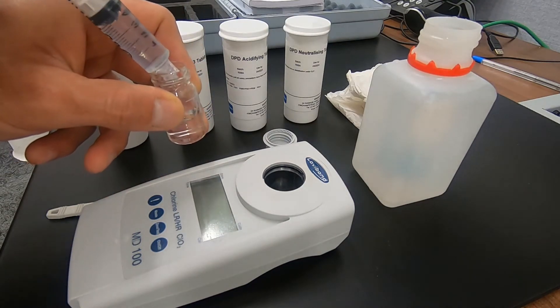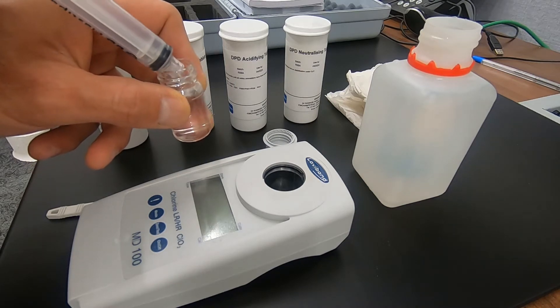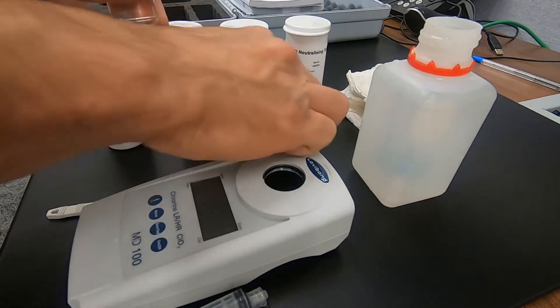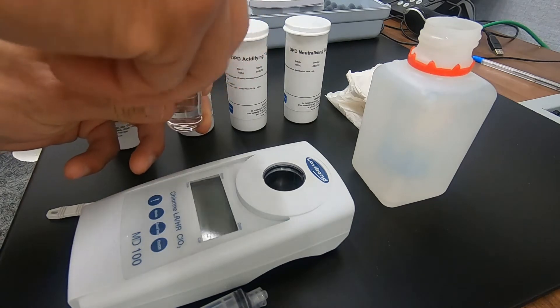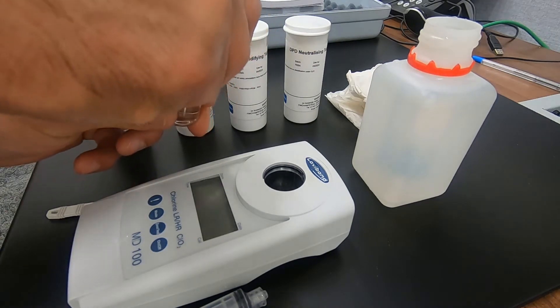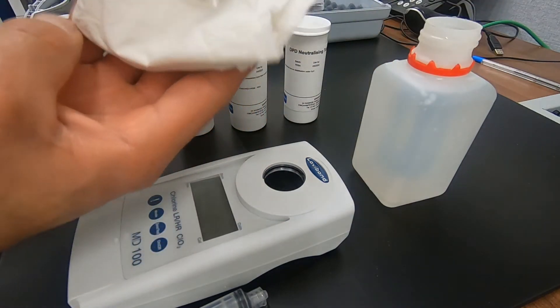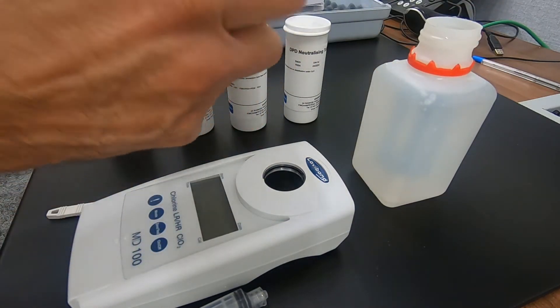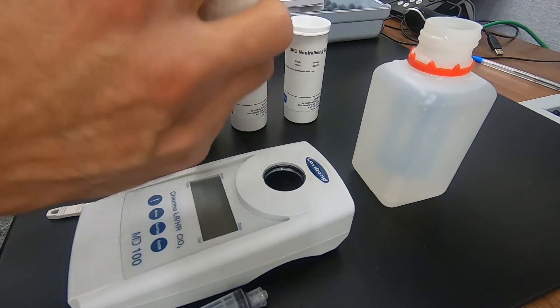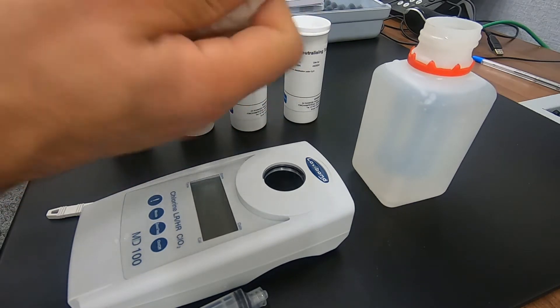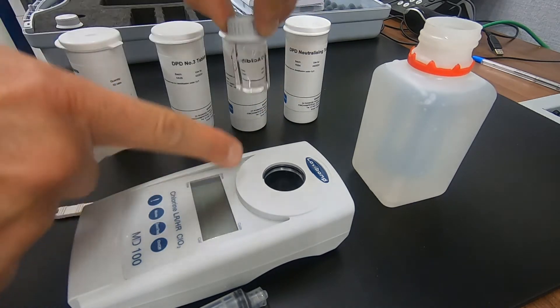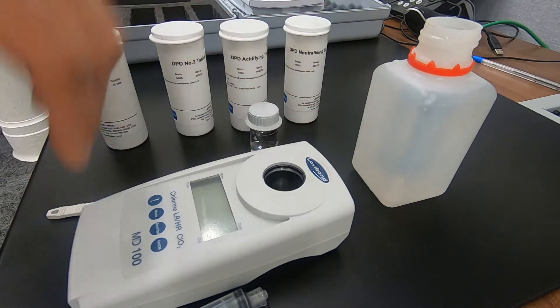Put that sample of water into the vial, place the cap on, make sure it's secure and tight. Using a soft cloth or paper towel, wipe the outside of the vial to make sure there is no water residue before we insert it into the photometer to do our zero test.